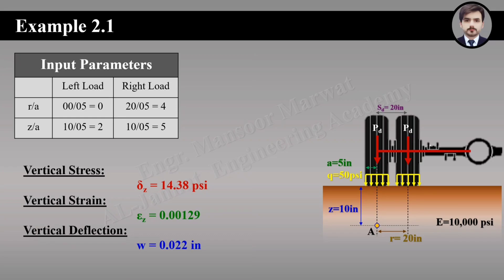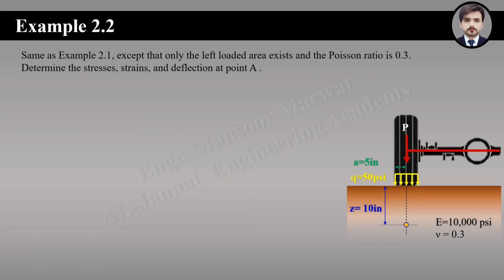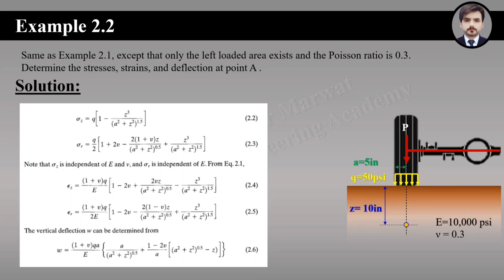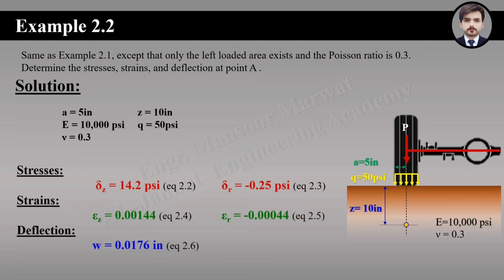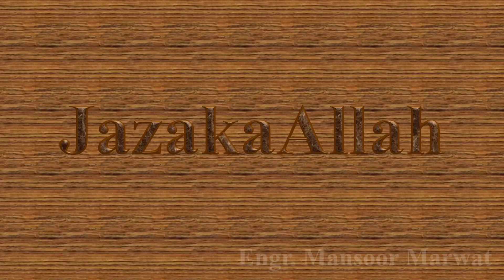Example 2.2 has the same data as Example 2.1 except that only the left loaded area exists and the Poisson ratio is 0.3. Since the Poisson ratio is 0.3 (not 0.5), we use the equations from the Huang book. The input parameters are: radius = 5 inches, depth = 10 inches, E = 10,000 psi, pressure = 50 psi, and ν = 0.3. Substituting these values gives the required stresses, strain, and deflection at point A.